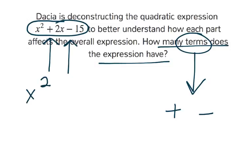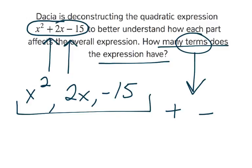The terms are x squared, 2x, and negative 15. So in this case, the answer is just three terms, or three.